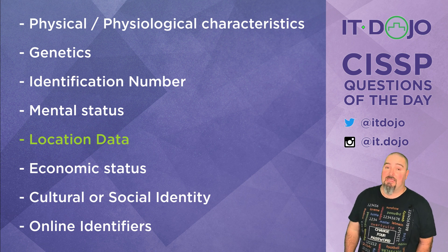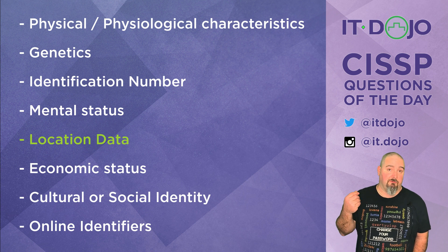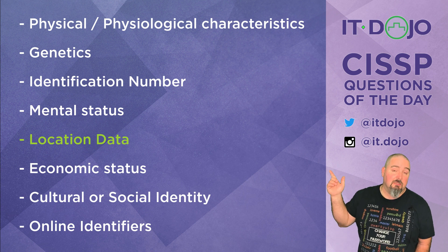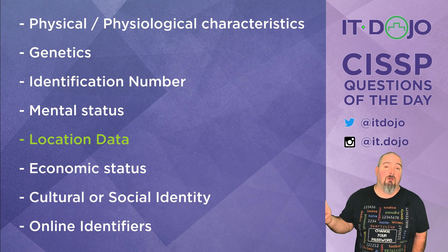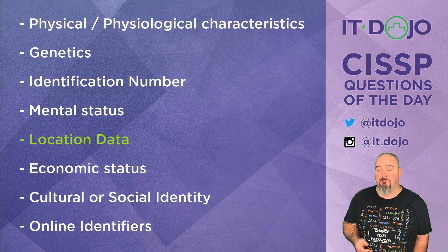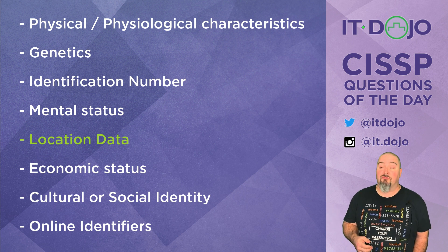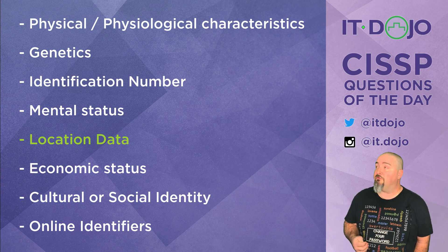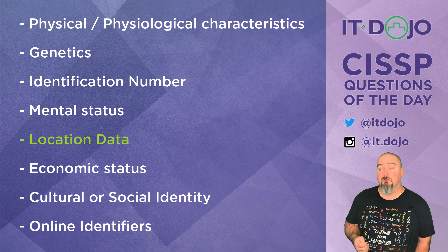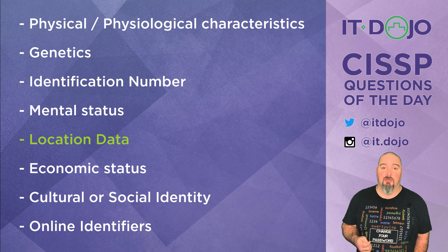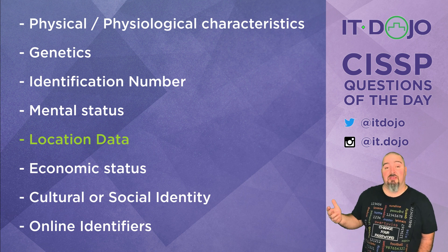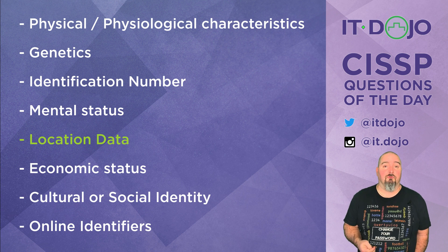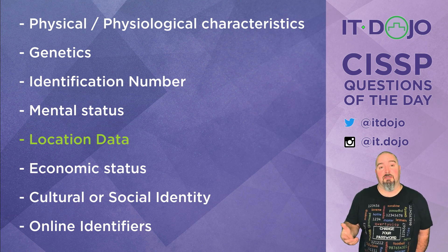How about economic status — how are you doing financially? Nope, that's always been included in the EU Privacy Directive and it's also in GDPR, as well as your cultural and social identity. Those things have also been protected information prior to GDPR, so that's not new. And then the very last one is actually the second right answer choice we're looking for, which is your online identifiers.